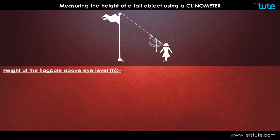Now to calculate the height of the flagpole above our eye level, we will use the formula tan x equals l upon h, where l is the distance between yourself and the flagpole, and small h is the height of the flagpole.